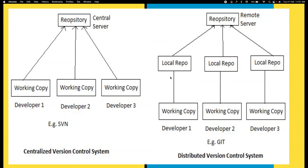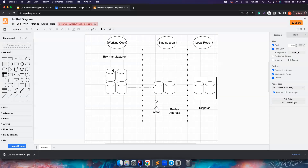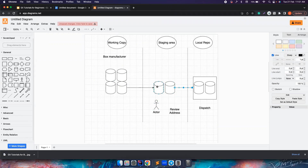You'll understand with a quick example what this staging area does. Let's assume you are a box manufacturer — you are doing some inventory for box manufacturing. You receive an order for two boxes. What do you normally do? You first review the order, check whether they have made the payment. Then you take two boxes and put them in some place so that they can be dispatched to the customer.